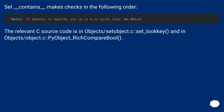set.__contains__ makes checks in the following order. The relevant source code is in Objects/setobject.c: set_look_key and in Objects/object.c: PyObject_RichCompare.